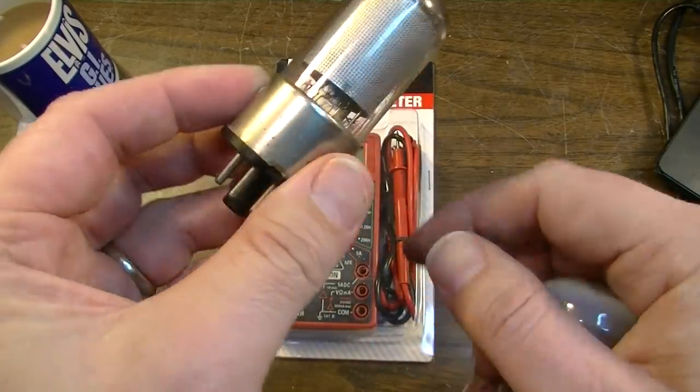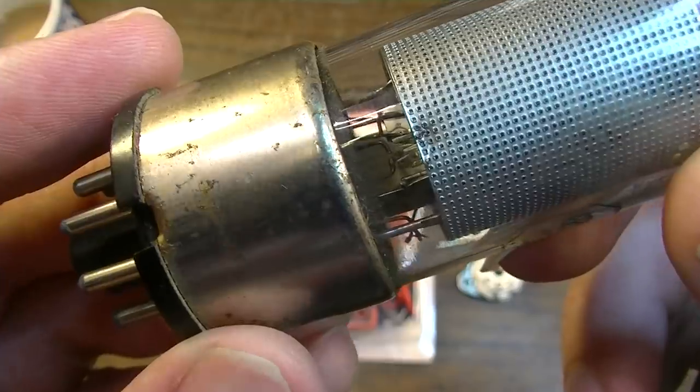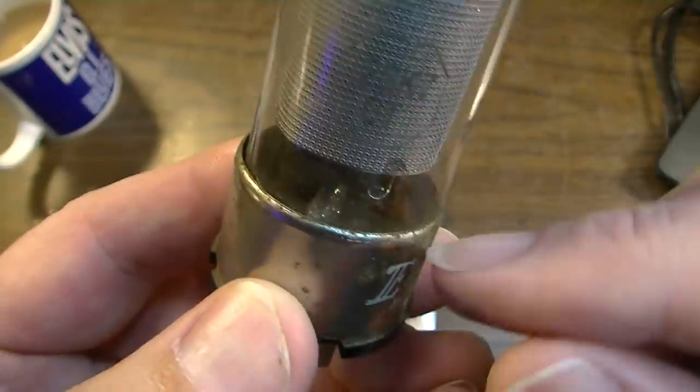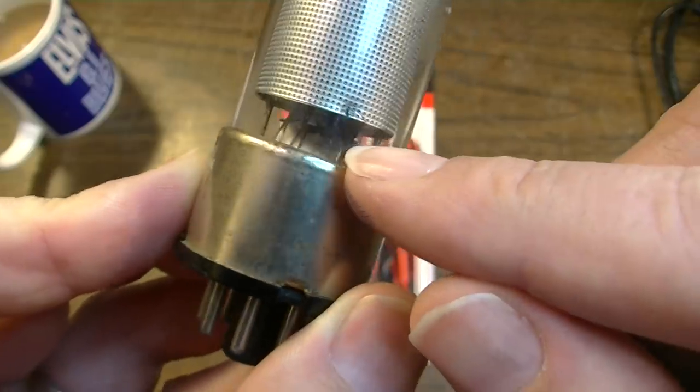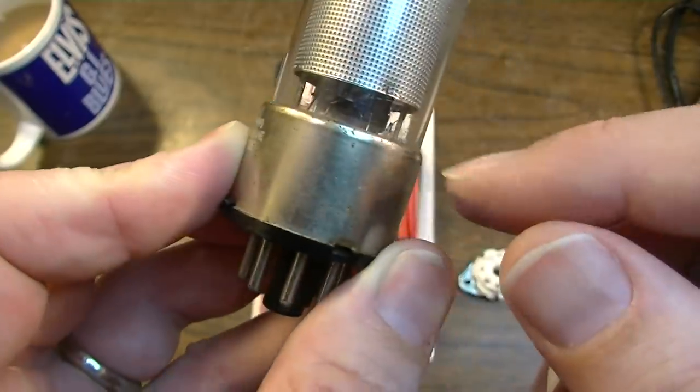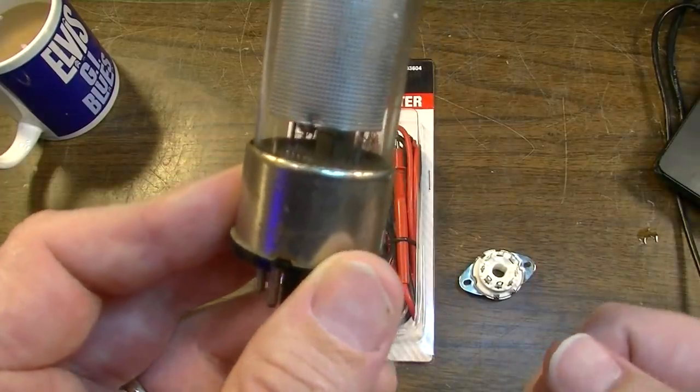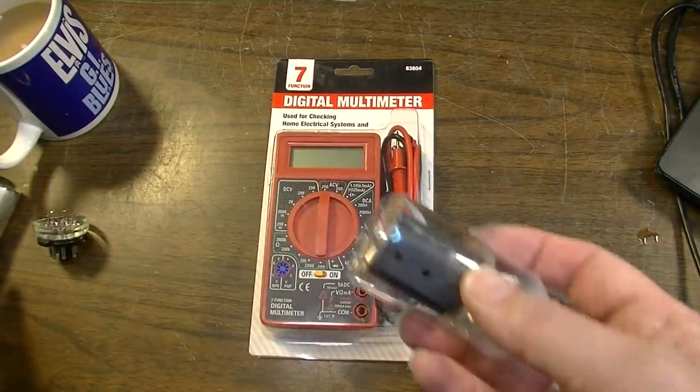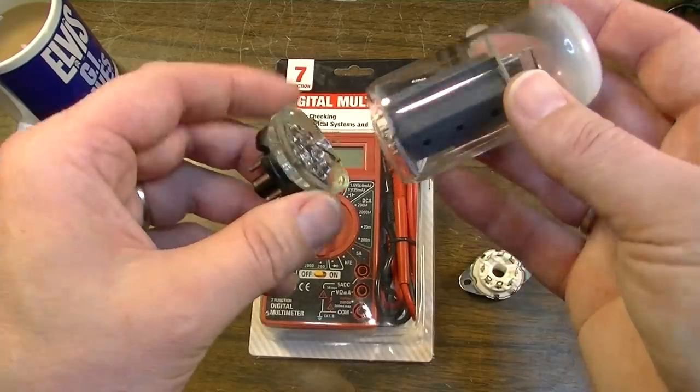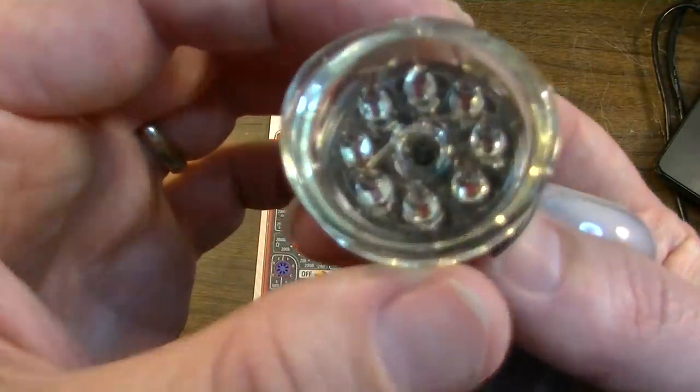You can actually see down inside of there, you can see that each one of the pins goes up and connects to one of the elements in this tube. You can break the glass and clip all of those leads, separating those elements. But since we already have this tube that was broken for me, I'm going to start with this.